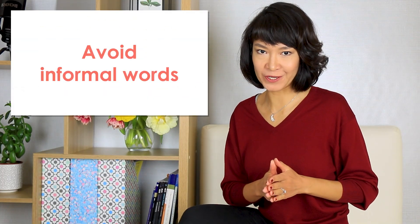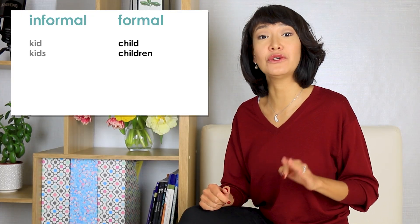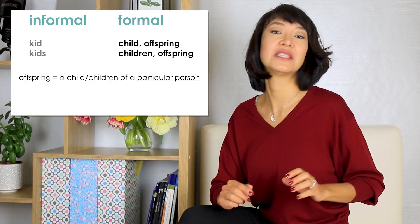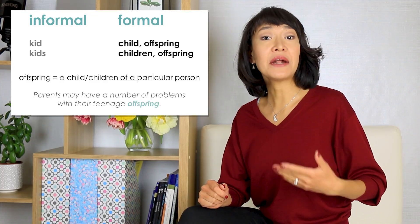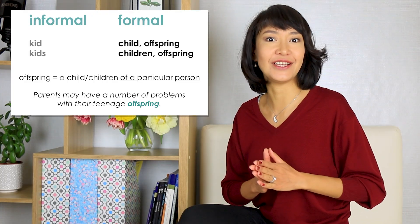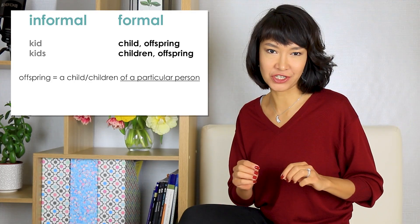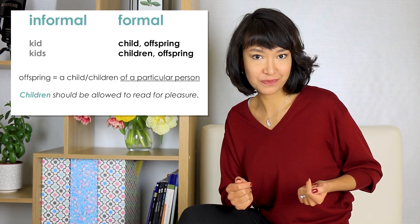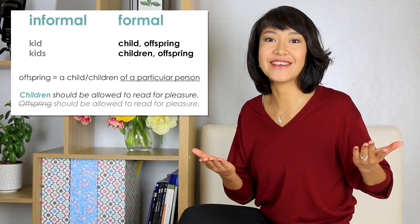Avoid informal words. Here are some common ones I regularly see in essays. A kid or kids — say a child or children. In some cases you can use the word offspring, which means a child or children of a particular person. So even if you mean several children, say offspring without an S at the end: 'Parents may have a number of problems with their teenage offspring.' However, if you're talking about children without mentioning their parents, you must use the word children: 'Children should be allowed to read for pleasure.' We can't use offspring there because there is nothing about their parents.